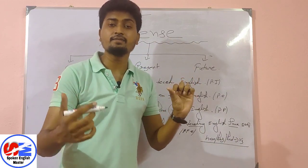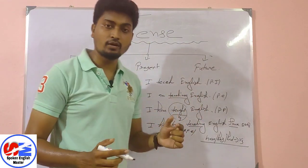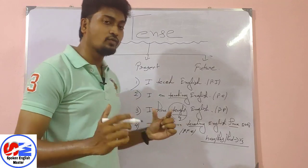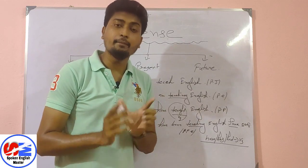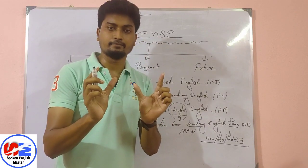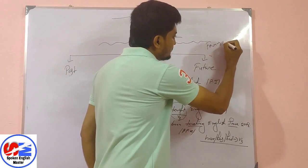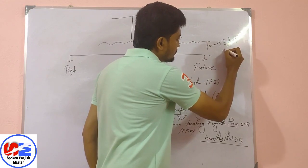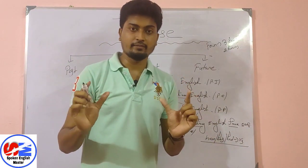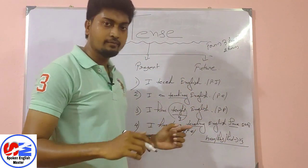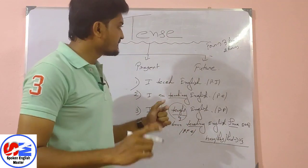Generally students don't have problems with the first three present tense types, but with present perfect continuous tense they do face some difficulties. The key thing to keep in mind is: whenever we add a time period or a point of time, we need to distinguish between 'for' and 'since.' Time period means a duration — like 'for three days' or 'for two hours.' I will upload a dedicated video on this topic to explain it in detail.